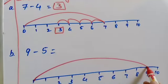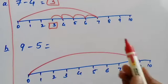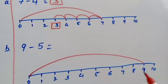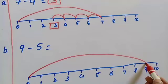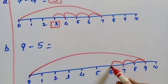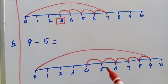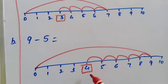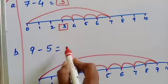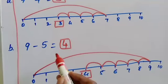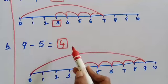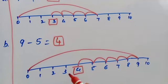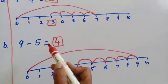Jump to 9 directly. So from 0 to 9. The next number is 5, so we have to come back 5 steps backward: 1, 2, 3, 4, 5. From 9 we count back 5 steps. The answer is 4. So 9 minus 5 is equal to 4. From 0 to 9 we jump, then we take 5 small jumps backward, and we get the answer 4.